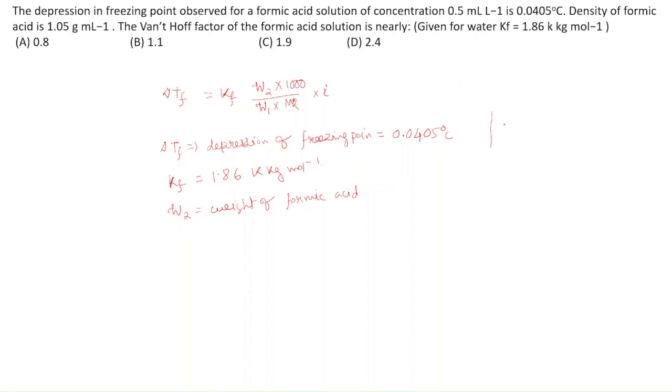We need the weight. D = m/V, where D is density and m is weight. Density of formic acid is given as 1.05 g/mL. Volume is 0.5 mL.